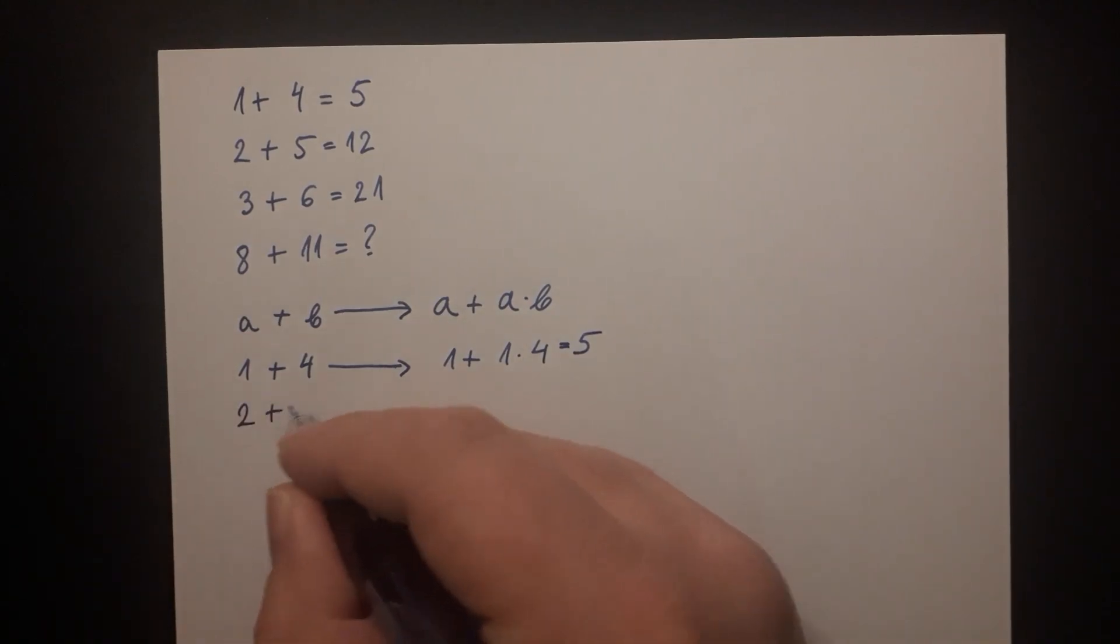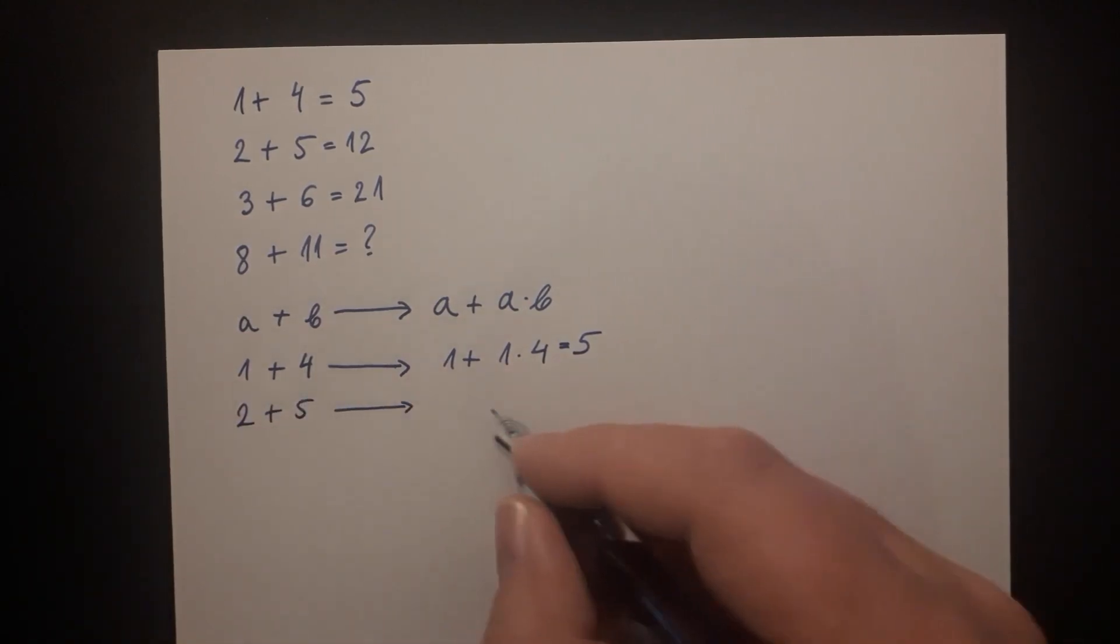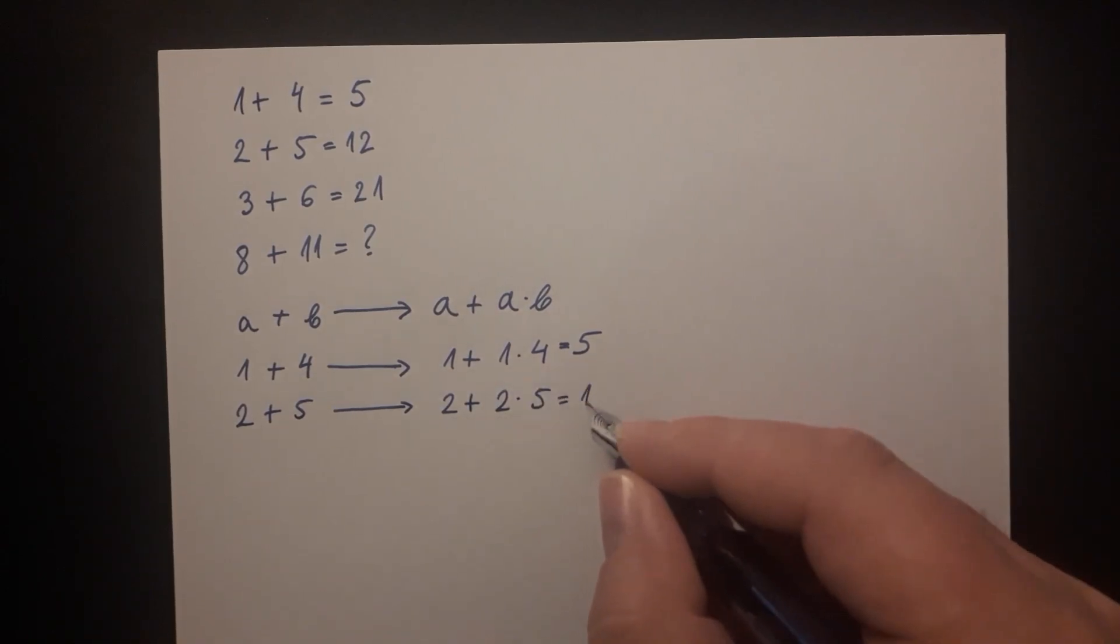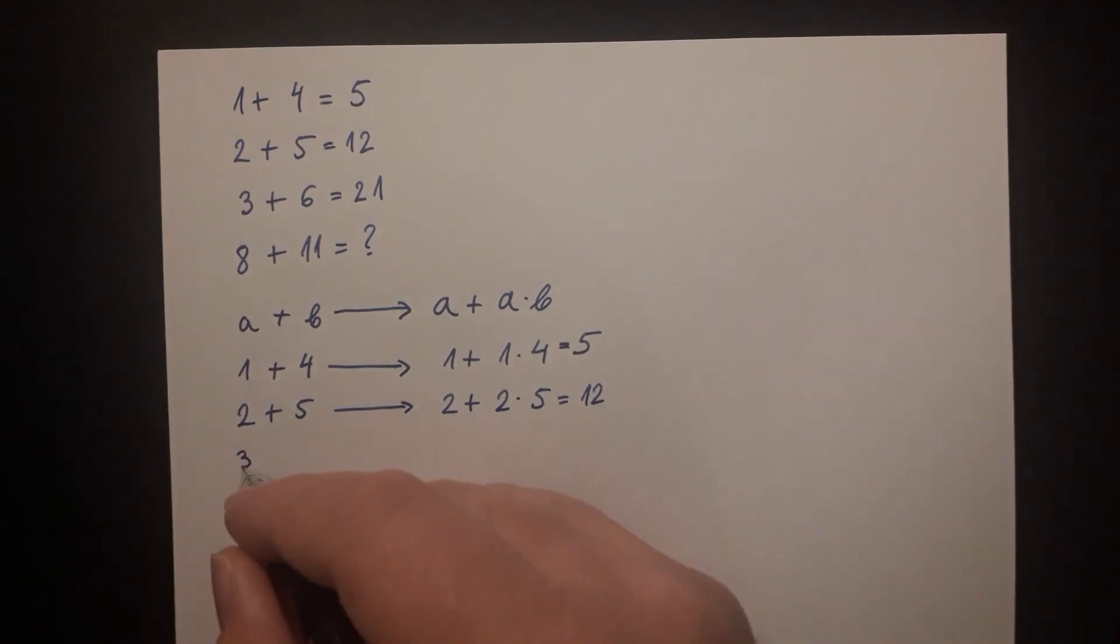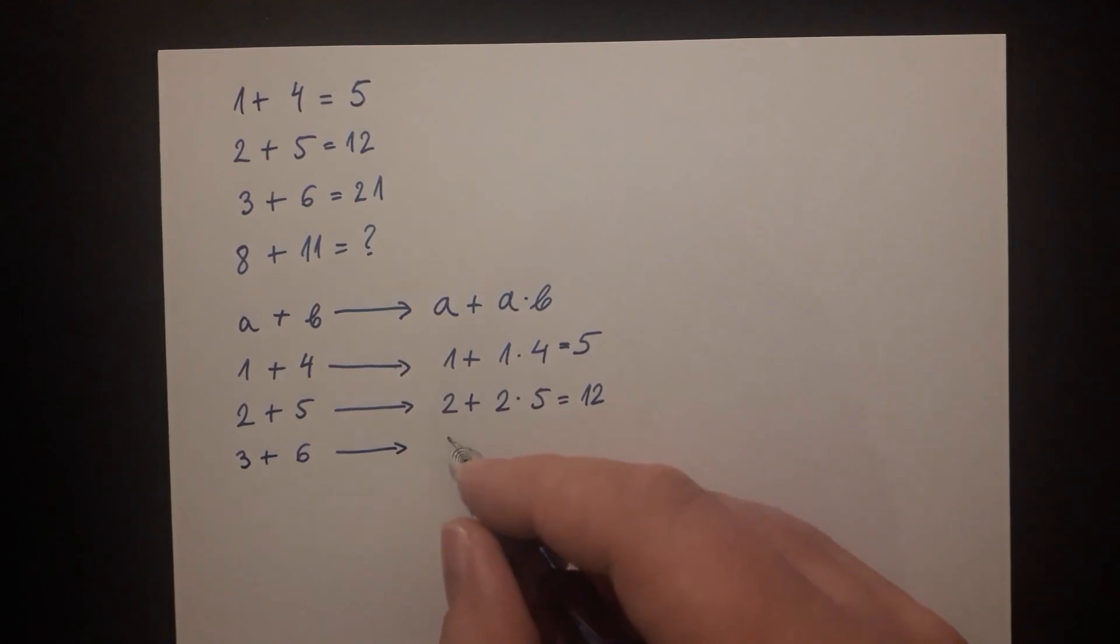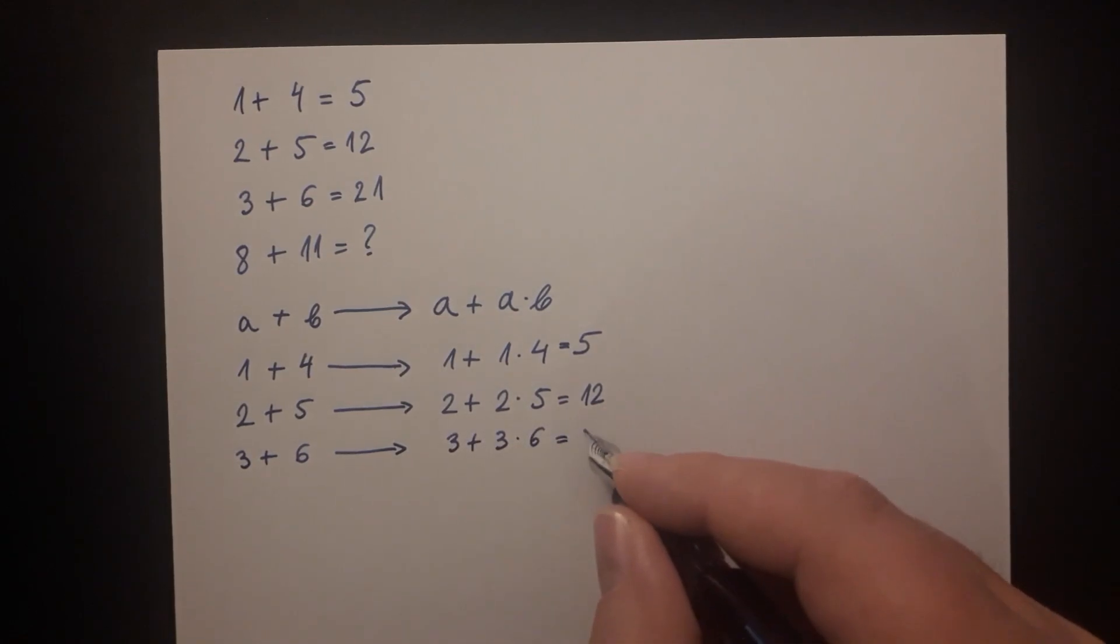The second line 2 plus 5 should be interpreted as 2 plus 2 multiplied by 5 which is equal to 12. The third line 3 plus 6 should be interpreted as 3 plus 3 multiplied by 6 which is equal to 21.